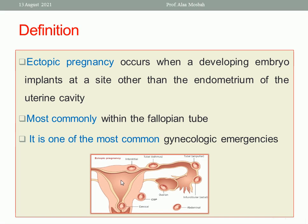The commonest type is tubal ectopic pregnancy. The commonest site in tubal ectopic is the ampullary portion, constituting 70% of ectopic pregnancies, while all tubal ectopics constitute more than 95% of all ectopic pregnancies.